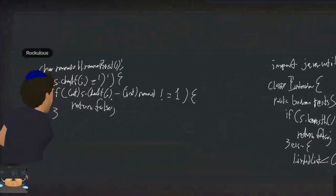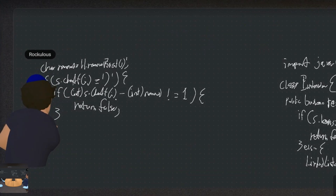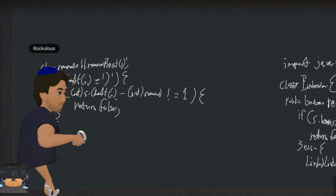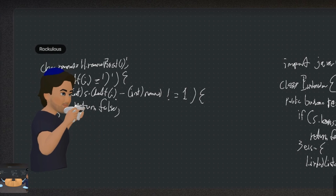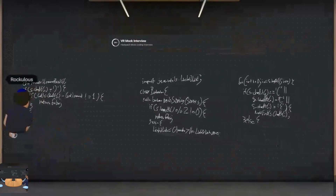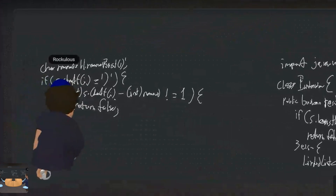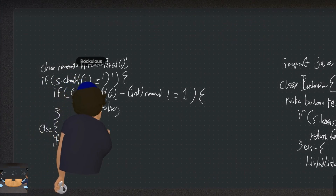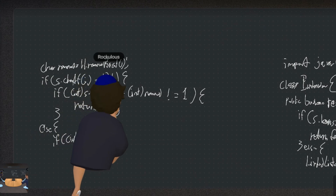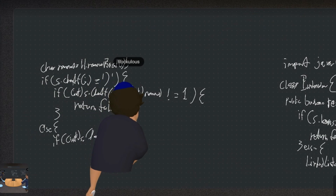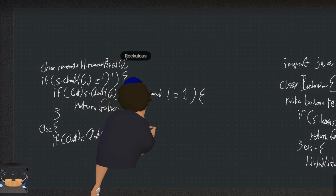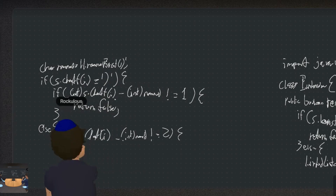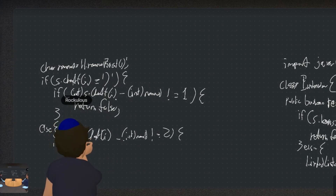Otherwise, if it's not a closing parenthesis, then we know it's either a bracket or a curly brace — those ASCII values are two apart. So: if (int) s.charAt(i) minus (int) removed is not equal to two, then again return false.